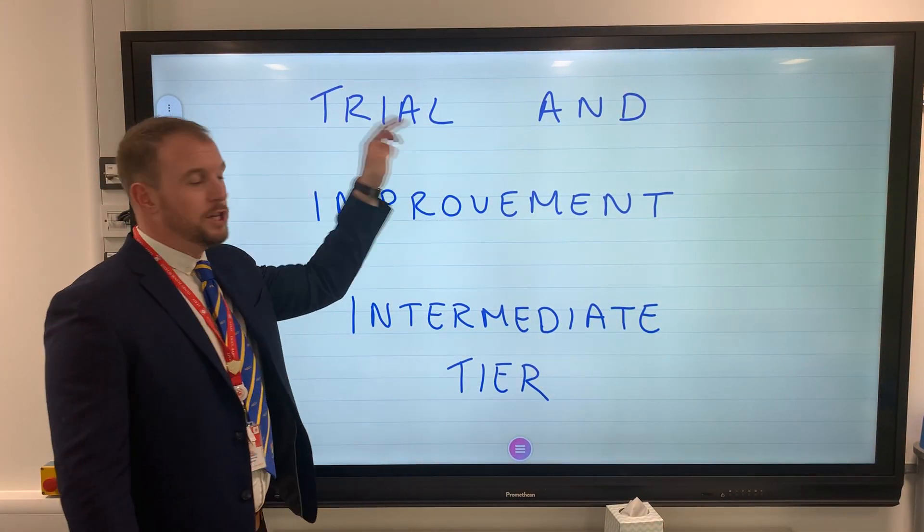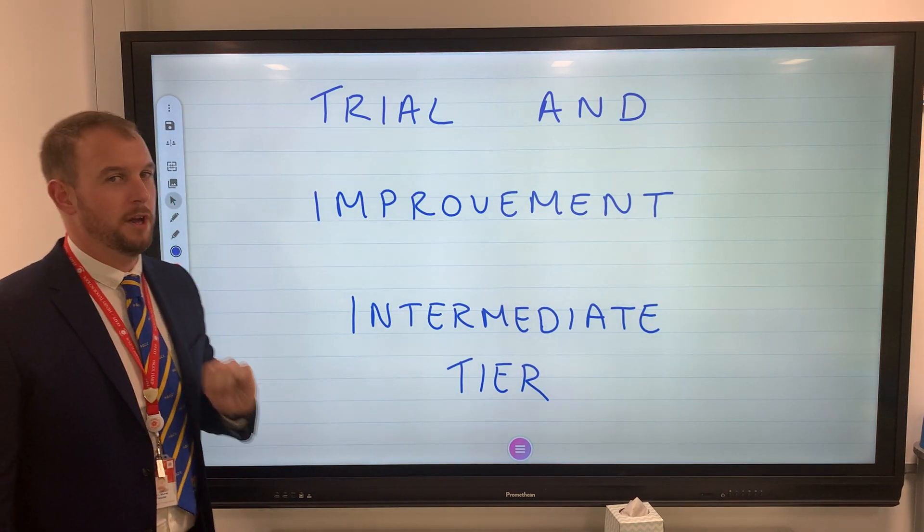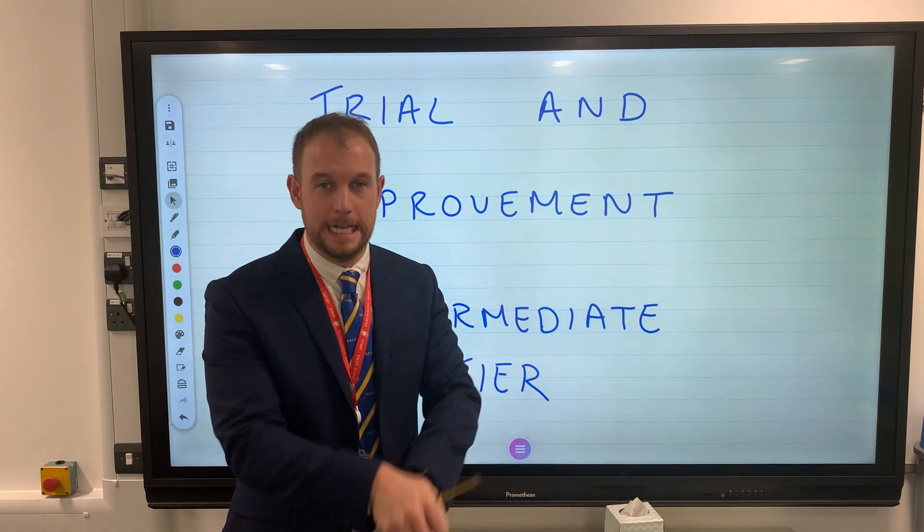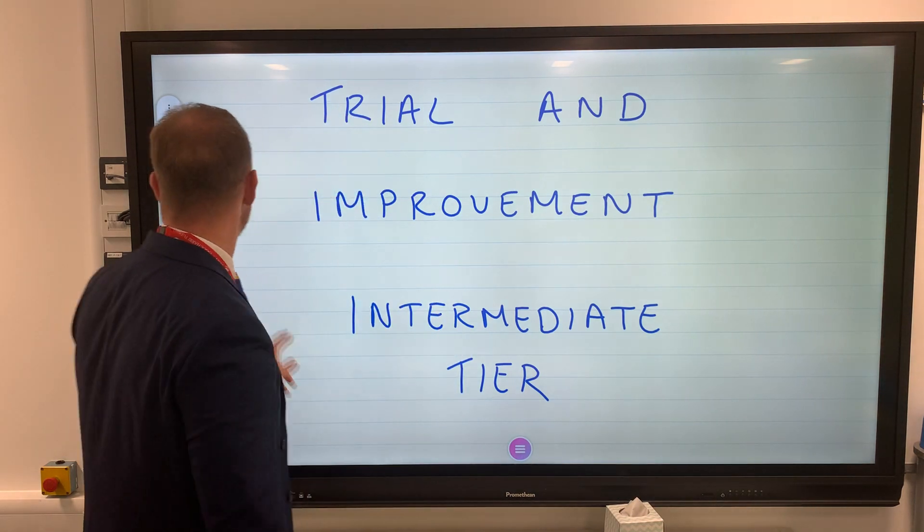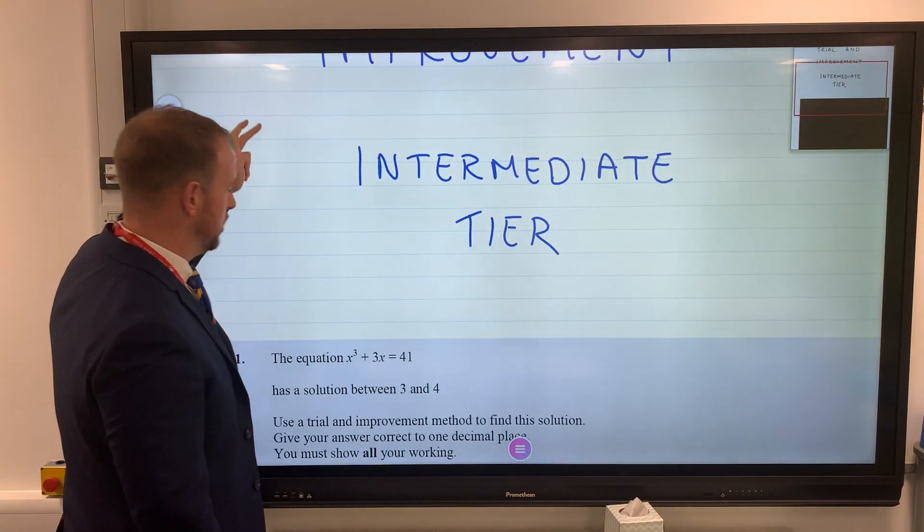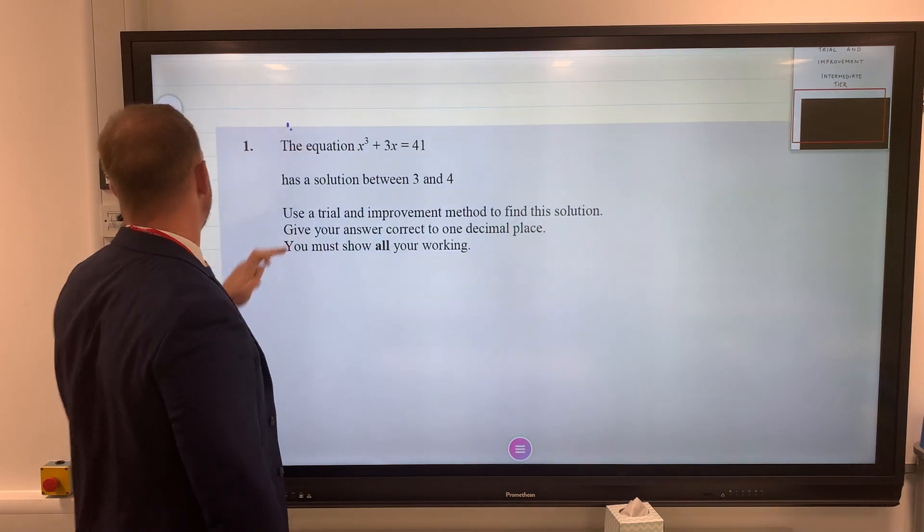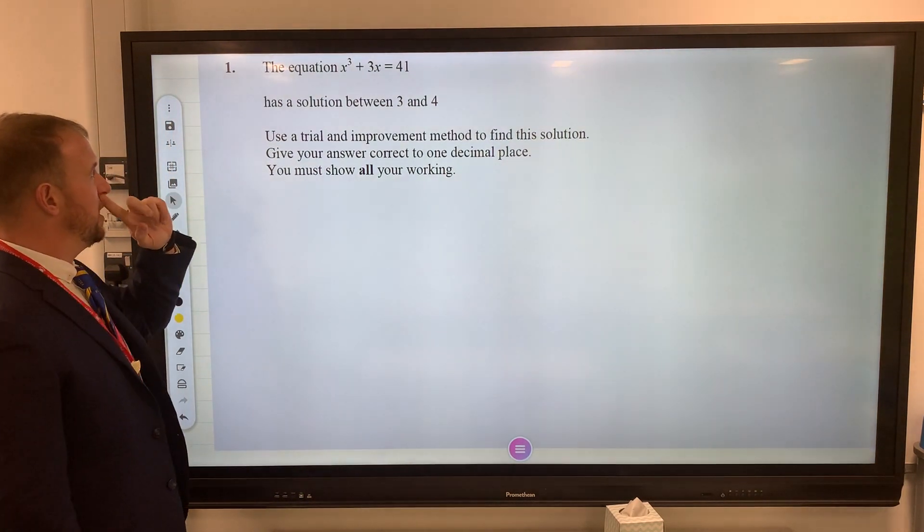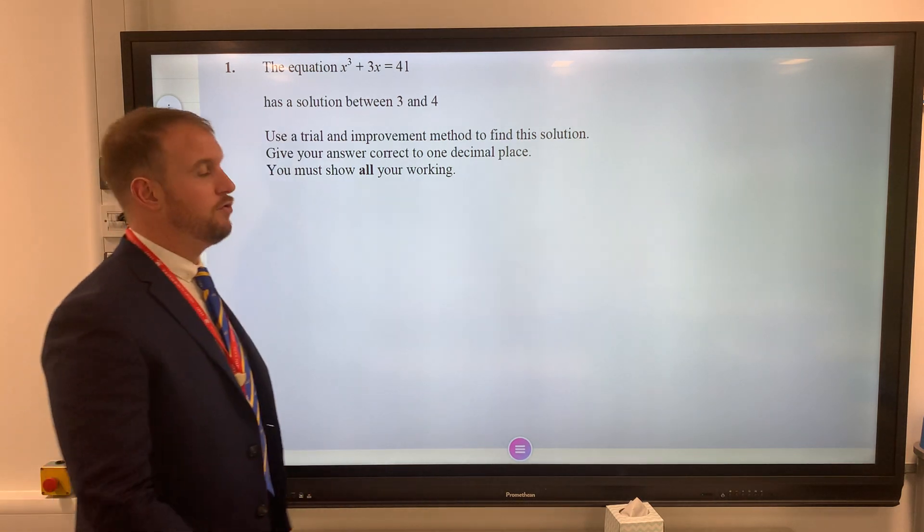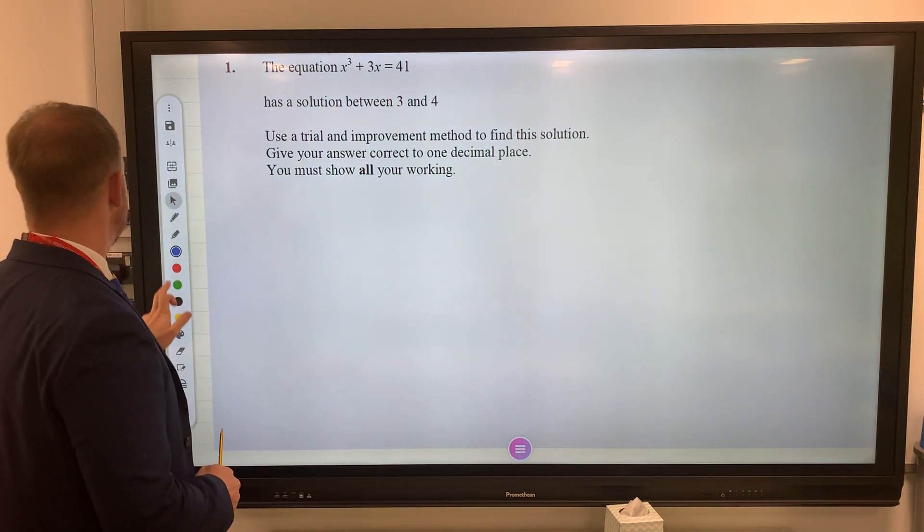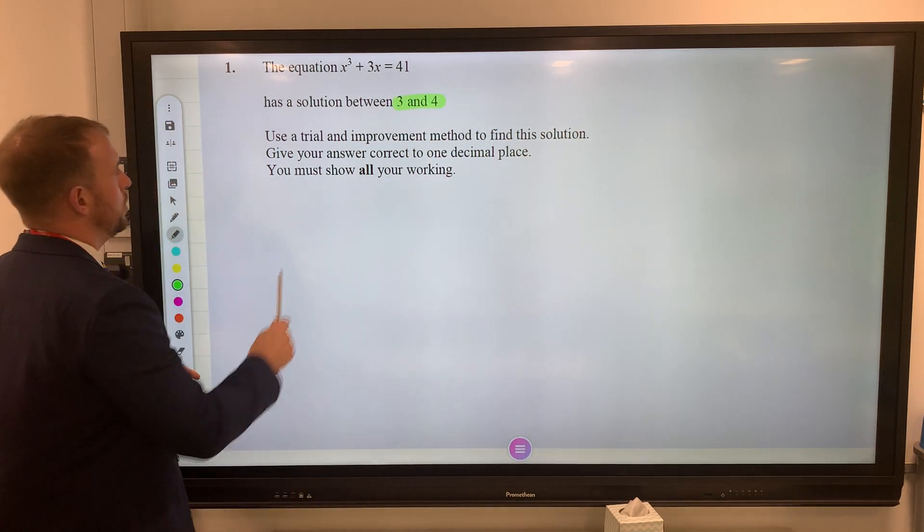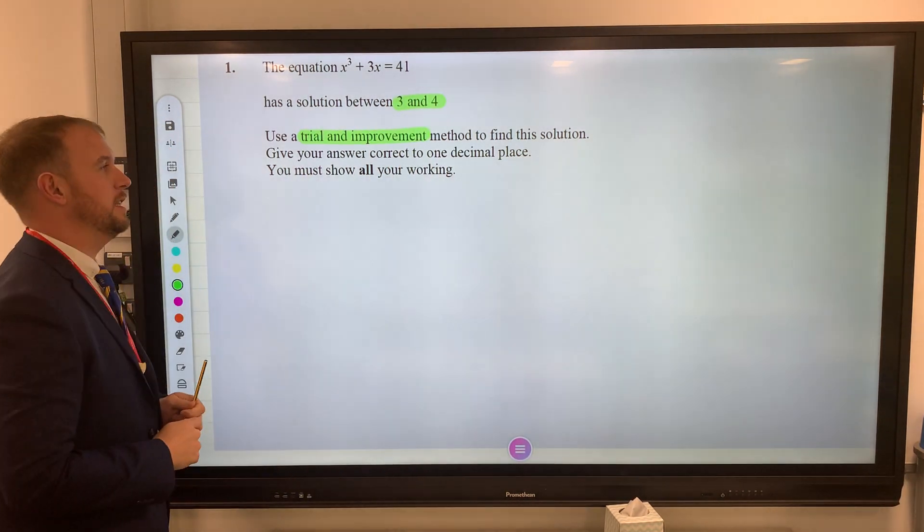Today we're looking at trial and improvement - four marks that are there every year for you to easily collect. It's a similar looking question every year. The equation x³ + 3x = 41 has a solution between 3 and 4. Use trial and improvement to find a solution to one decimal place.